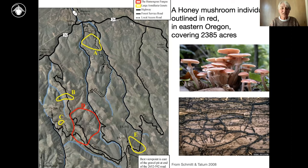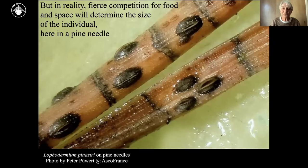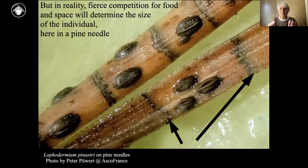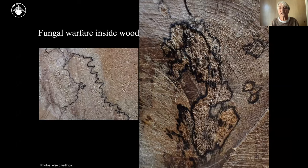Some species can have gigantic individuals, but in most cases fierce competition for food and space keeps them small. You can see this in a pine needle where black lines are walls between two individuals: one with enough area to make three fruiting bodies, others with only enough for two. This fungal warfare is visible in wood as well — black lines are three-dimensional walls where individuals fight for resources.